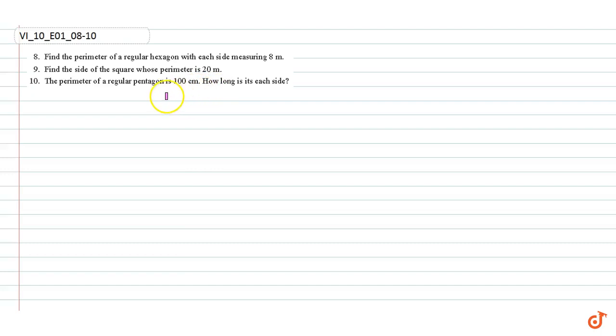In this video we are going to answer questions 8, 9, and 10. Question 8: Find the perimeter of a regular hexagon with each side measuring 8 meters. We know that a regular hexagon has six sides.